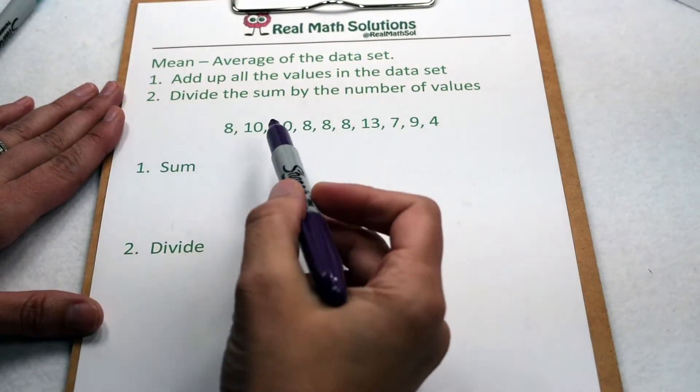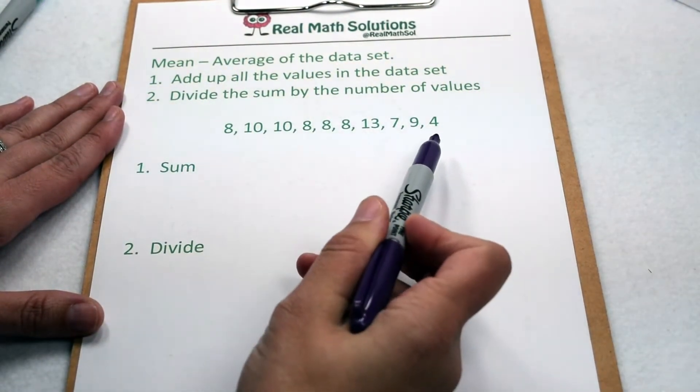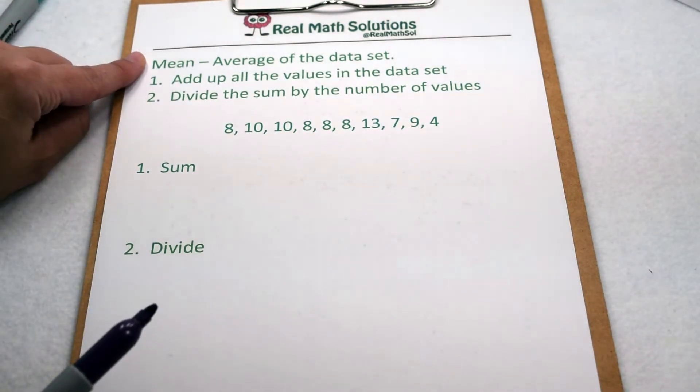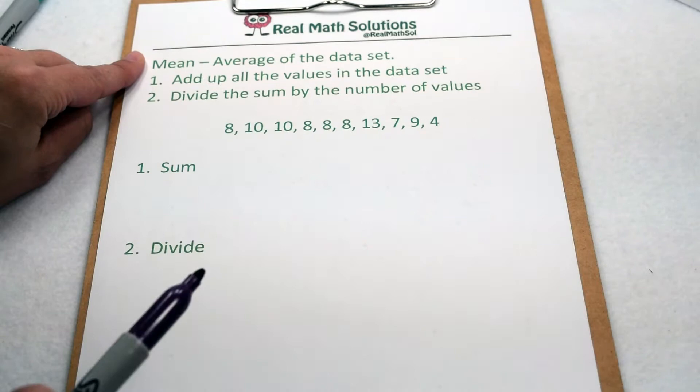Measures of central tendency attempt to describe a set of data by identifying a single value in a central position in that data. One measure of central tendency is the mean. The mean is also referred to as the average of our data set.